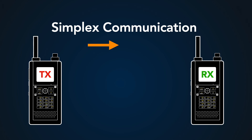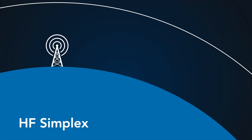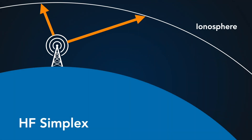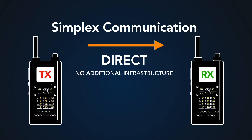Simplex communication is where you have a direct line of communication from one radio to another. On VHF for hams, this is perhaps the most common way of chatting with another ham — just a straight connection, antenna to antenna, radio to radio. On the HF bands, all of your HF communication is also technically simplex. Your radio's signal may be bouncing across the ionosphere or going via ground wave, but it is a direct connection.